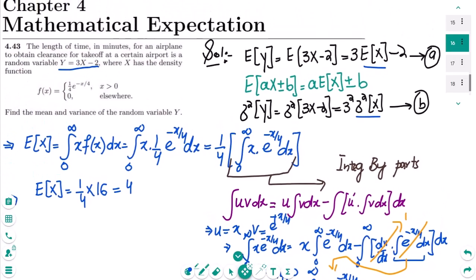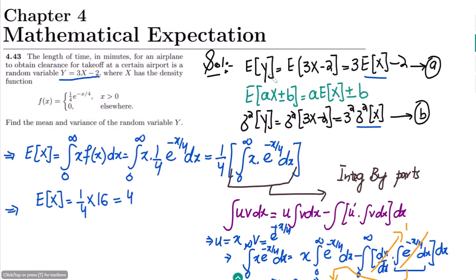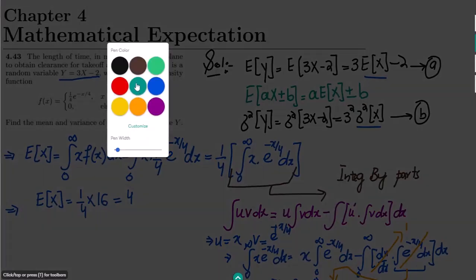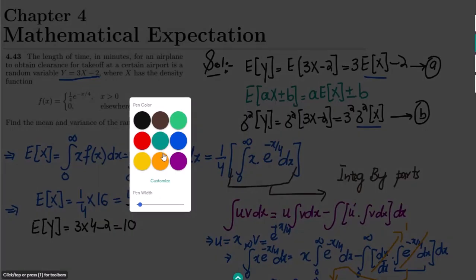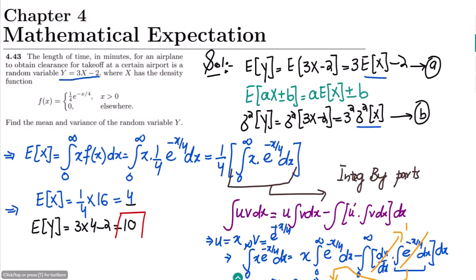Now let me use equation A to find E[Y]. From equation A, E[Y] = 3·E[X] minus 2. Since E[X] = 4, this gives 3×4 minus 2 = 10. So the mean of question 4.43 is 10.